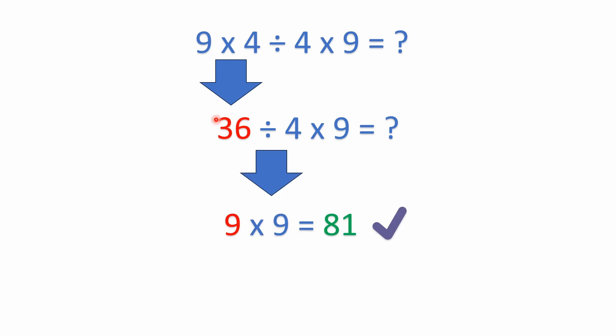Alright, then we have 36 divided by 4. The next operation is division going left to right. 36 divided by 4 is 9. And then we're just going to be left with 9 times 9 is 81. So the correct answer to this problem is 81.